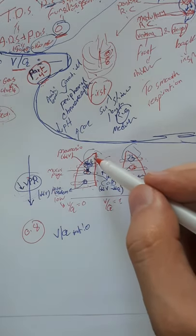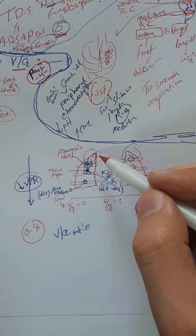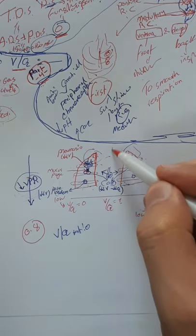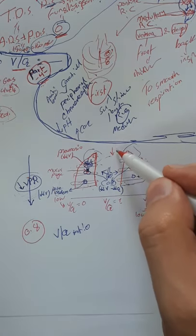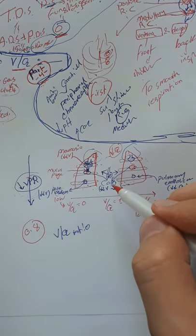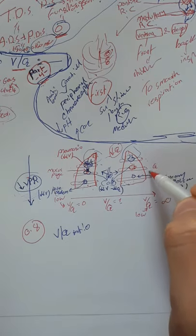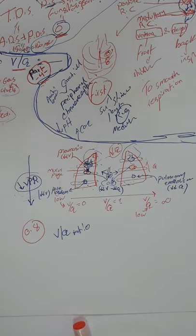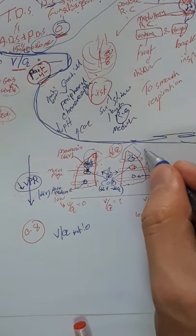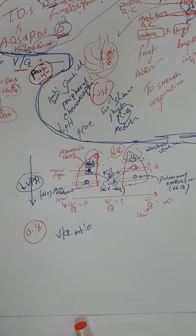The lungs are divided into three zones. Blood traveling to zone one — the apex, at the top — will have decreased perfusion because of gravity. This is represented by Q. Blood flow to the base of the lung has increased perfusion, so Q is increased at the base. At the apex, we have wasted ventilation: the gas going into the alveoli isn't exchanged efficiently because there is less perfusion.